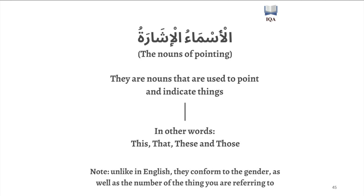As-salamu alaykum wa rahmatullahi wa barakatuh. Alhamdulillah, in this lesson we'll be closing the topic of al-asma' al-ishara. So we covered how to say 'this' and 'that' for singular things, and we also covered how to say it for dual things. And now in this video, we're finally going to talk about how to say 'these' and 'those' for things that are jama', or plurals.